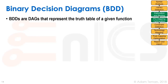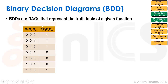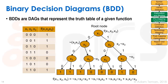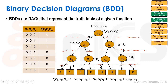BDDs are directed acyclic graphs that represent the truth table of a given function. We take a truth table with three inputs x1, x2, and x3, and one output f. A binary decision diagram takes each one of these inputs in order, giving us layers: the layer of x1, the layer of x2, the layer of x3.